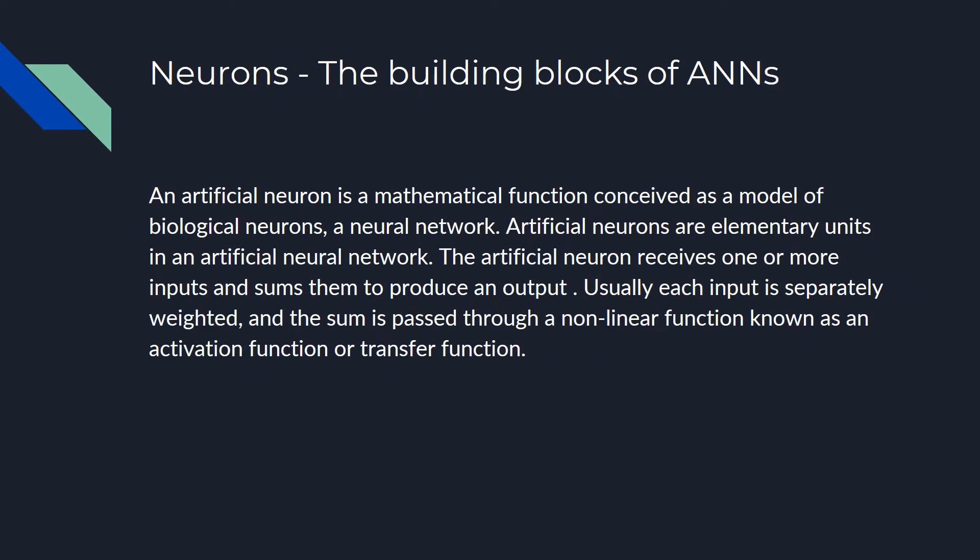Moving to neurons — the building blocks of ANNs. Neurons are the elementary units in any artificial neural network. A neuron receives one or more inputs, sums them to produce an output, which is passed through a non-linear activation function.